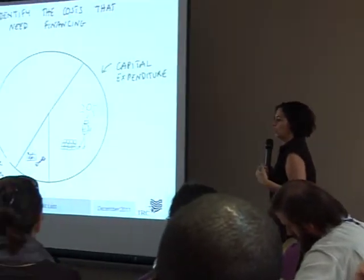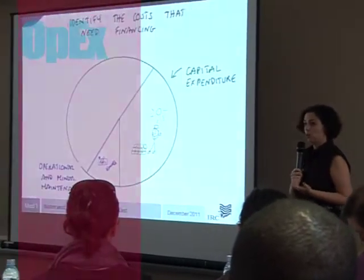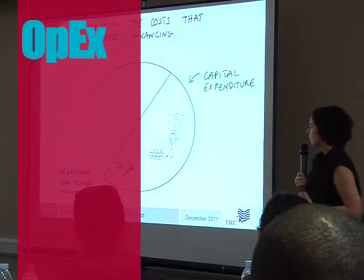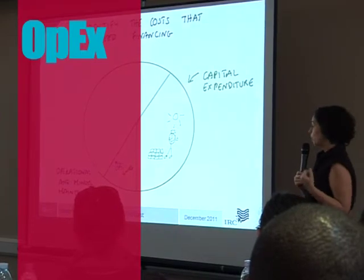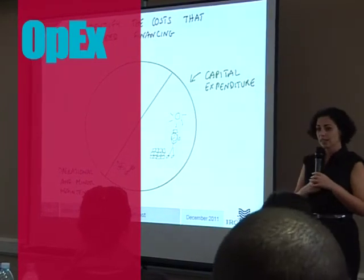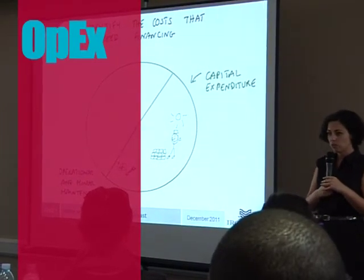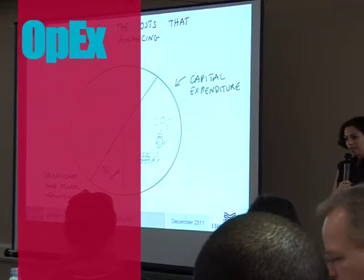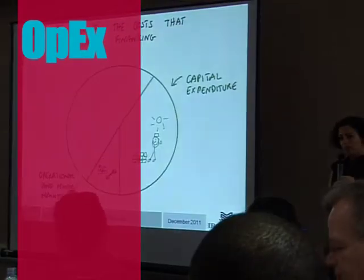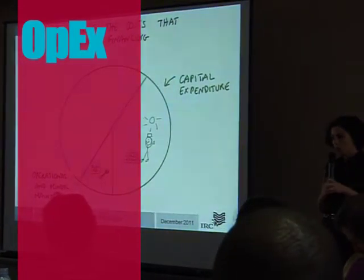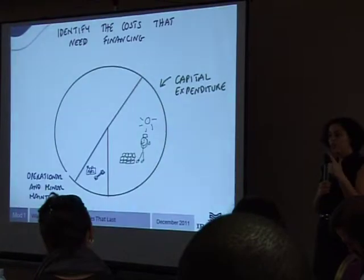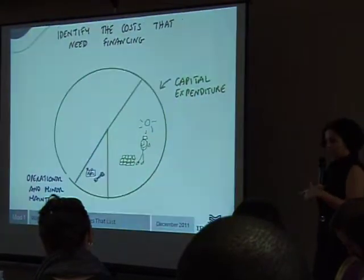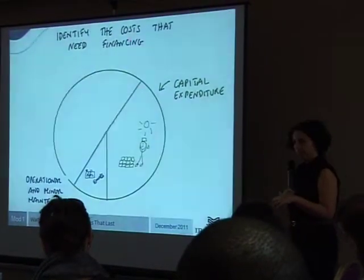The second cost component is usually known in the sector as O&M. In technical terms, it's operational and minor maintenance — it's OPEX, operational expenditure. This tends to be regular, minor, and small. Communities can usually cope with this one.